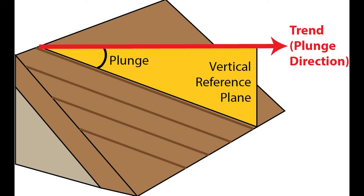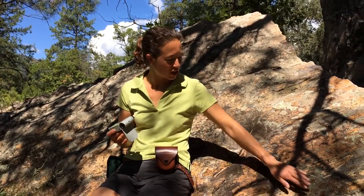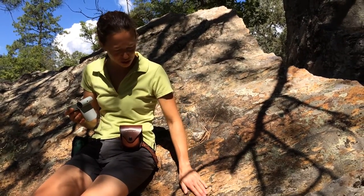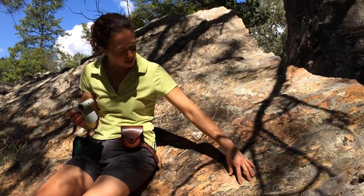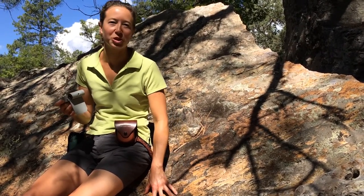Unlike strike, trend only has one correct bearing, because it is the direction towards which the lineation plunges down. The axis is the only transit that can simultaneously measure the trend and plunge of lineations on any surface. For this first example, I'm going to show you how the axis can measure the trend and plunge of these slicken lines, a lineation formed by fault motion along this boulder.